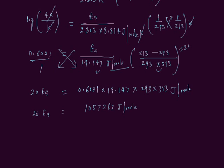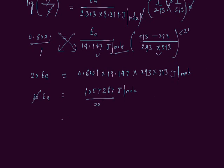You can transfer 20 to the right side. Then you will get it as the denominator. We divide this number by 20. The number we have is 52863 joules per mole. And here it is Ea.